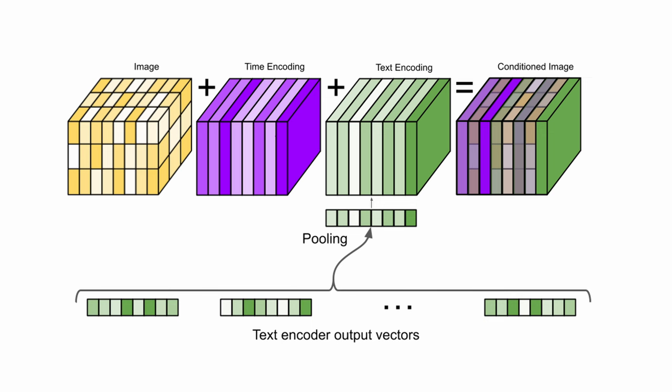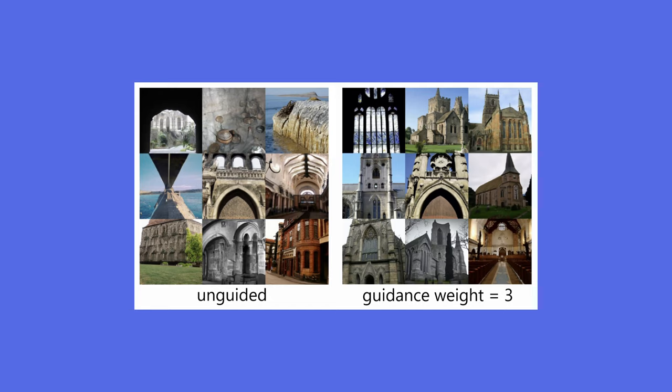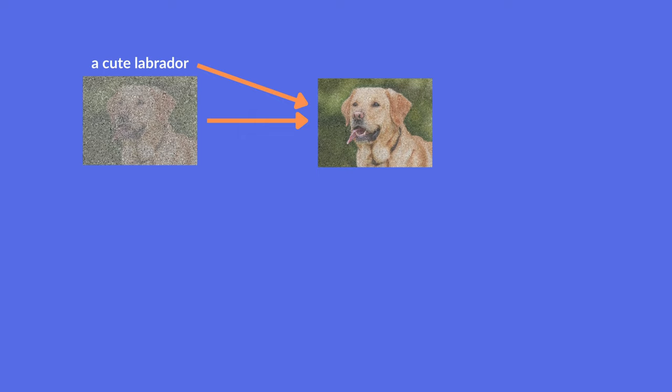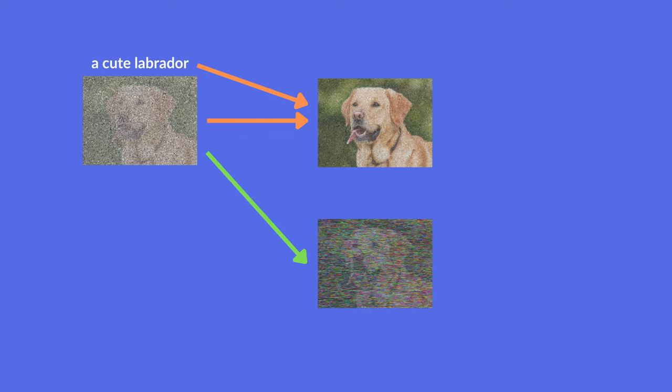Lastly, we need to inject the information generated by the text encoder into the diffusion model. At each time step, the text encoding is pooled and added to the time step embedding, and both are added to the image. In order to make the generated images as relevant as possible to the original caption, Imagen uses something called classifier-free guidance. Classifier-free guidance increases the fidelity of the images at the cost of diversity. The diffusion model generates an image using text guidance and then one without any text guidance. Their difference is used to find the direction the original image lies in, and we extrapolate toward that direction — helping the model capture the essence of the given caption.